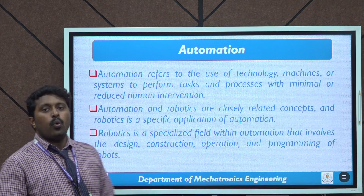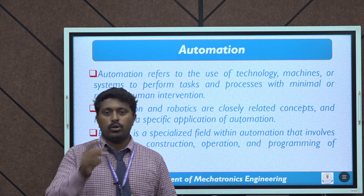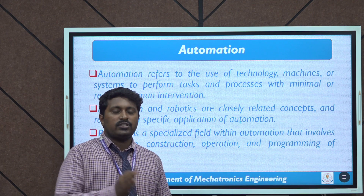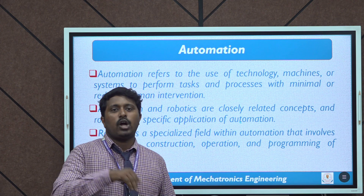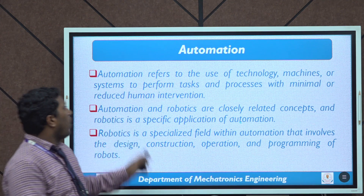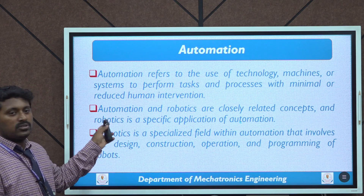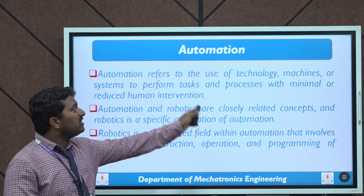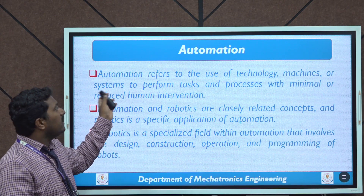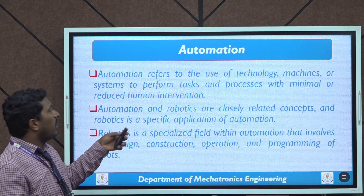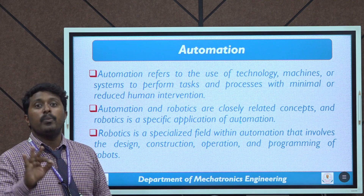Next, what is automation? Most of us have a little confusion about what is automation and what is robotics — are both the same or different? Automation refers to the use of technology, machines, or systems to perform tasks and processes with minimal or reduced human intervention.